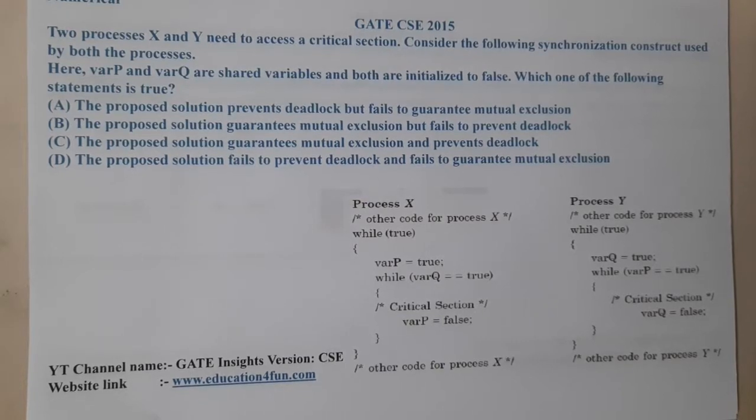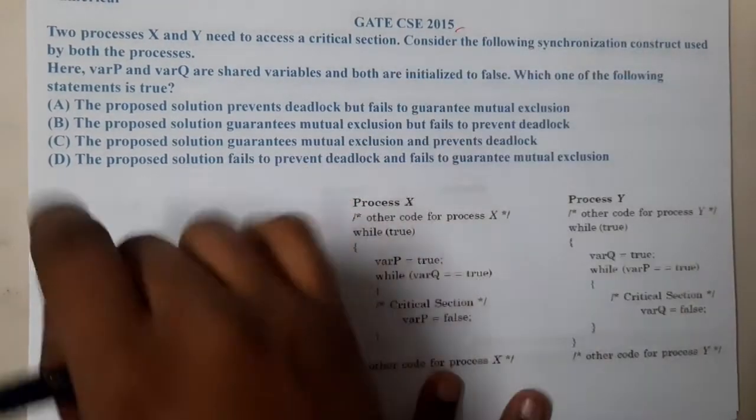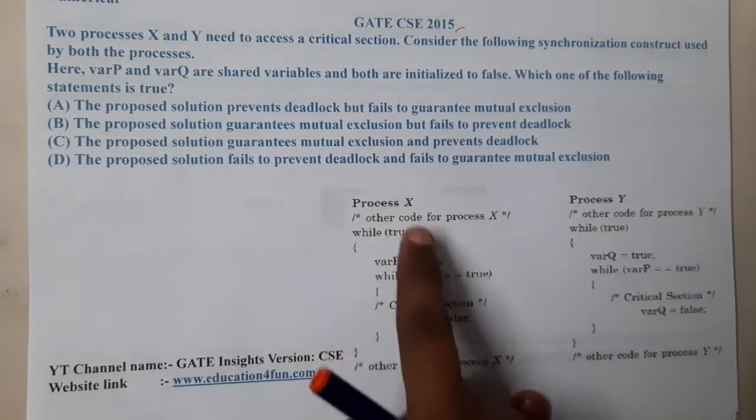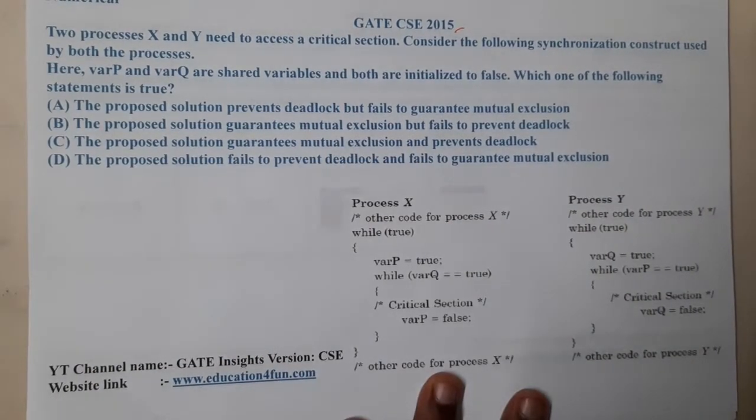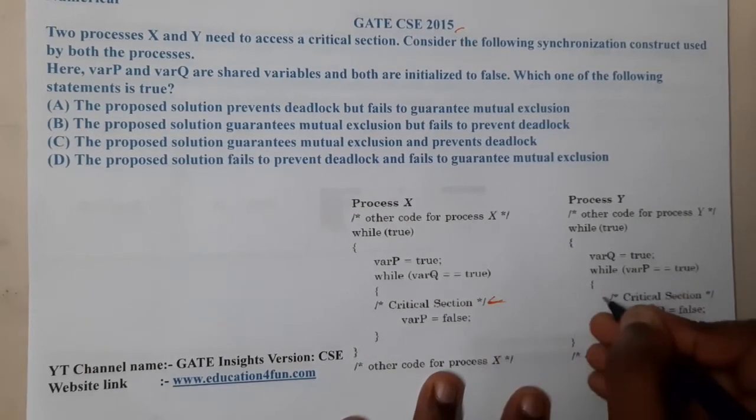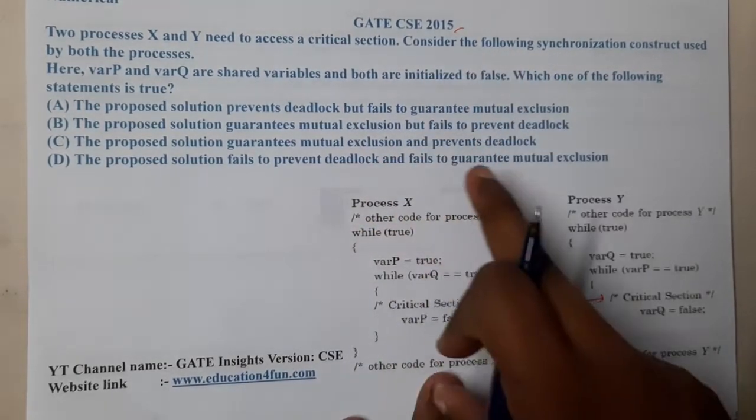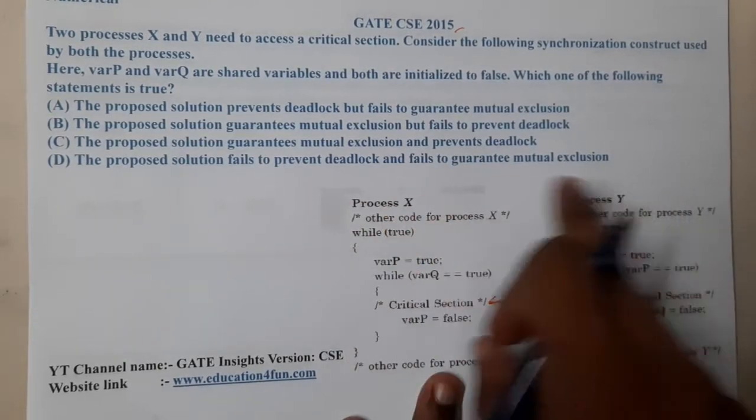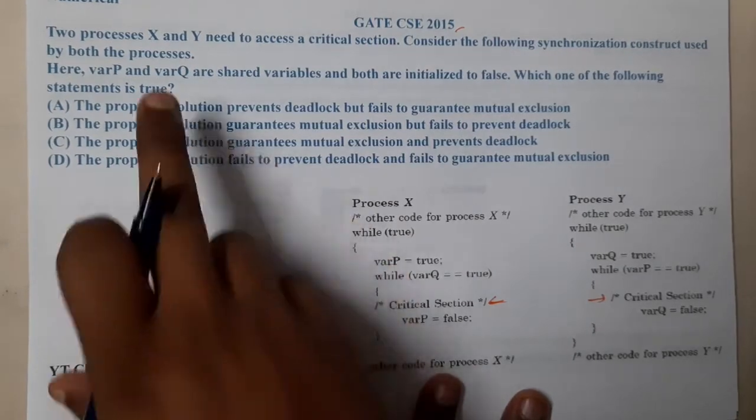Hello guys, we are back with our next lecture. In this lecture, let us go through the next question. This question belongs to GATE CSE 2015. The question is: two processes X and Y need to access a critical section. Consider the following synchronization construct used in these processes.